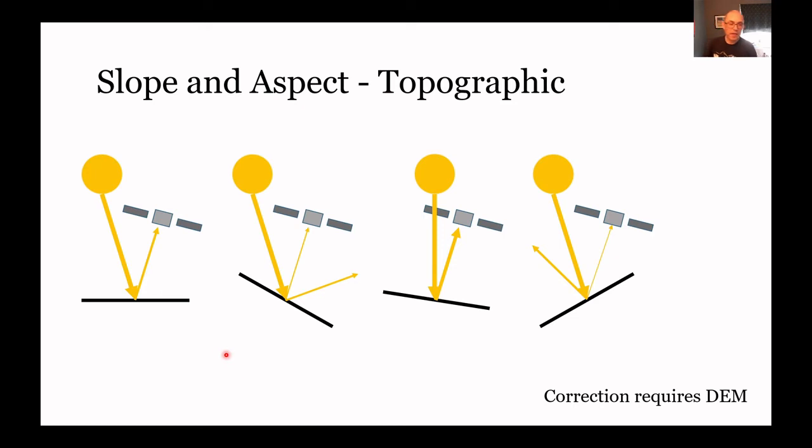So if the geometry between the sun and the sensor and the lay of the land, so to speak, is correct, we can get a pretty good signal strength reflected back at the satellite. As much as we can have it, the full signal strength.